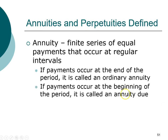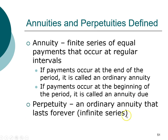If the cash flow occurs at the beginning of each period, that is called an annuity due. Rent is often due at the beginning of the month, whereas your credit card payment is often due at the end of the month. So your credit card follows the form of an ordinary annuity, and your rent payment is an annuity due.